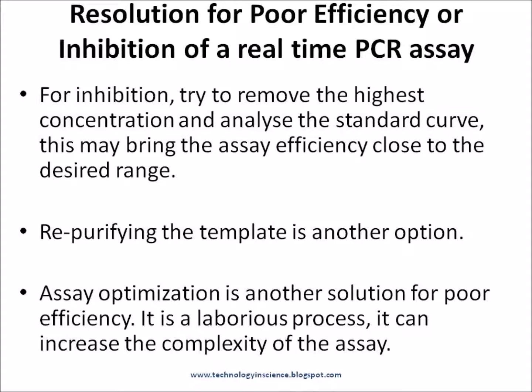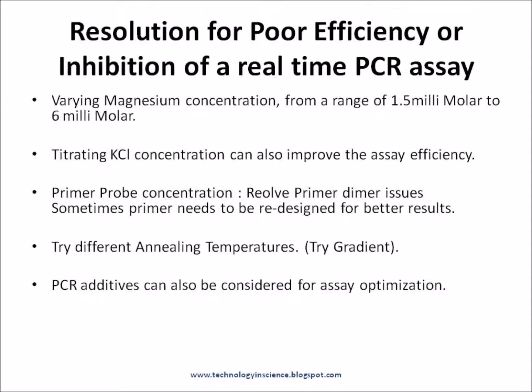Repurifying the template is another option and can be done without much difficulty. Use enough washing steps to wash off chaotropic salts, which can inhibit the reaction. Assay optimization is another solution for poor efficiency, though it is a laborious process that can increase assay complexity. Varying magnesium concentration across a range of 1.5 mM to 6 mM can improve assay efficiency.